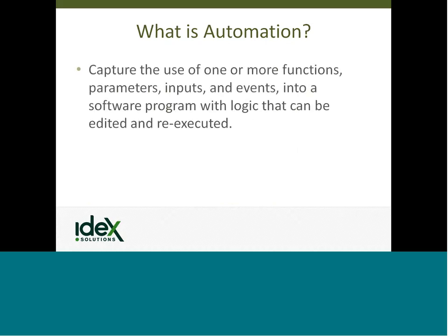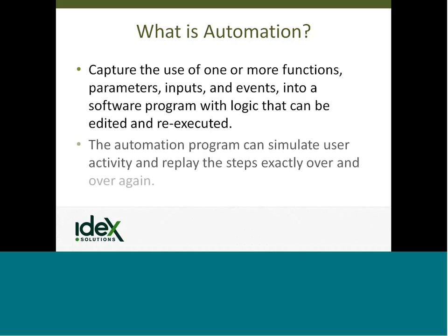So there are many things we could say about what automation is. Think of automation as capturing the use of one or more functions, parameters, inputs, and events into a software program with logic that can be edited and re-executed. It is very productive when it's necessary to reach the desired goal many times with different inputs, and the logic within the program can modify the results based on those varying inputs. The automation program can simulate user activity, and you can replay the steps exactly over and over again — we simply click run to perform that task repetitively.